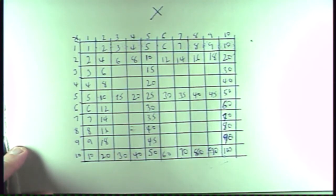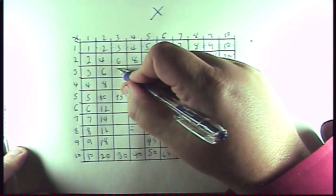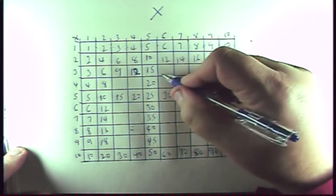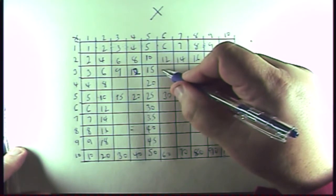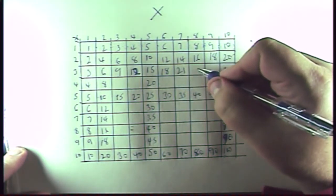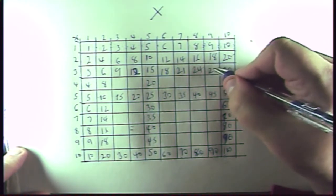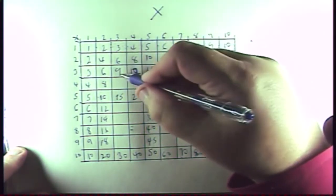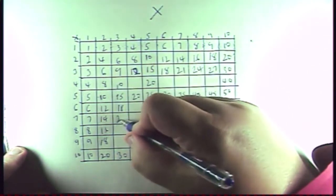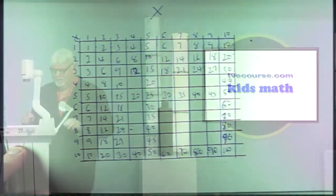The next ones are multiples of three. Three, six, nine. Add three to nine: twelve. Twelve plus three is fifteen. Fifteen plus three is eighteen. Eighteen plus three is twenty-one. Twenty-one plus three is twenty-four. And twenty-four plus three is twenty-seven. And the same progression fills in: nine, twelve, fifteen, eighteen, twenty-one, twenty-four, twenty-seven. See how I'm completing this chart?